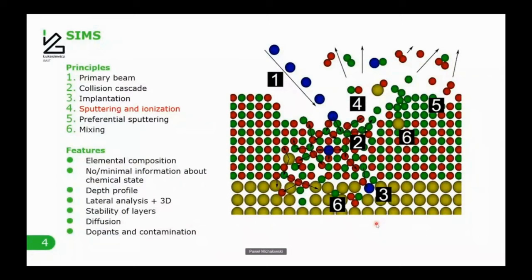Now I would like to introduce the Secondary Ion Mass Spectrometry technique. This technique is usually not as well known as MXenes nowadays. The principle is that we bombard the sample with a primary ion beam. These ions collide with atoms from the sample, transfer part of their energy, knock atoms out of their stationary positions, and set them in motion. Those atoms further collide with other atoms, transferring kinetic energy and generating what we call a collision cascade.